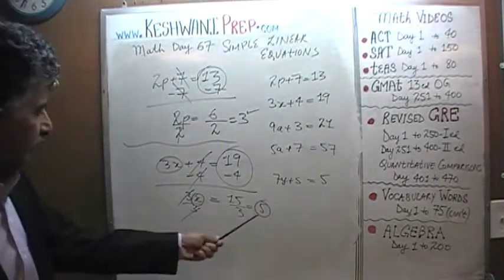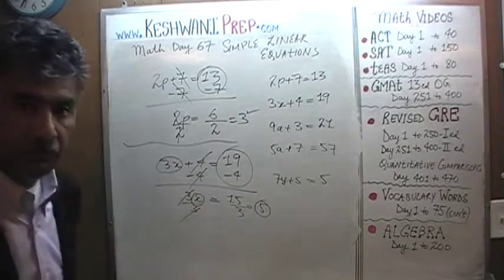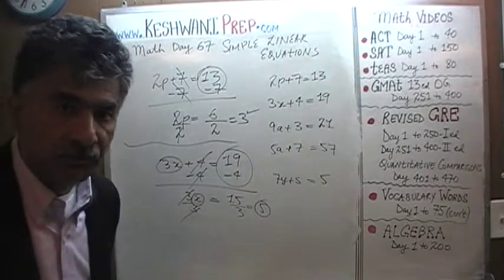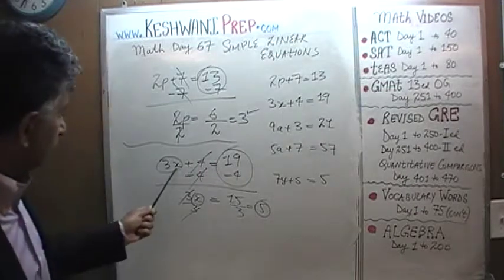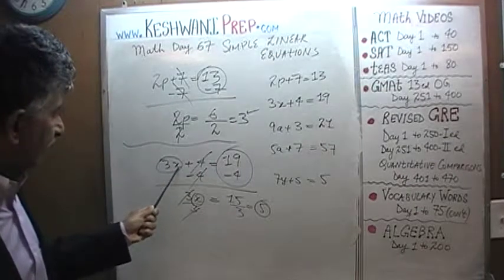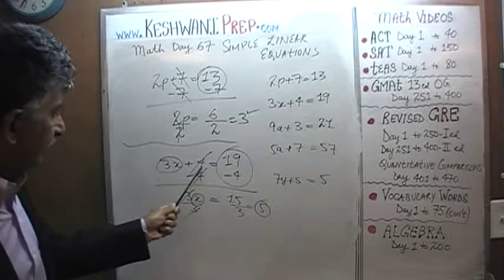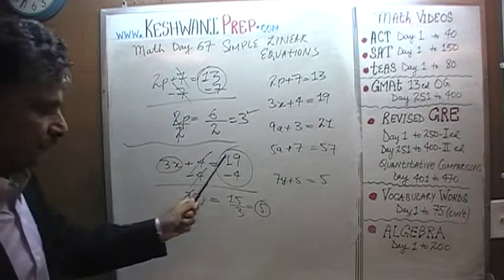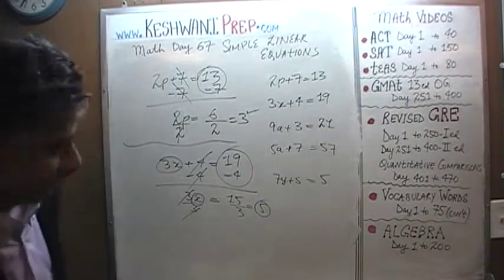Let's put it back in the equation and make sure it makes sense. 3 times 5 is 15. 15 plus 4 is 19 — that's exactly what we have here.